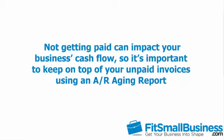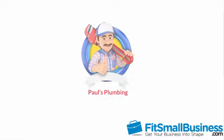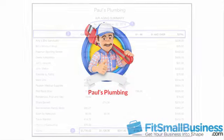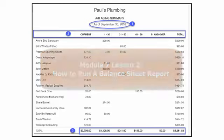To help demonstrate the components of the AR aging report, we will take a look at the AR aging report for a fictitious company, Paul's Plumbing. Here you will find the AR aging summary report as of September 30, 2016 for Paul's Plumbing. Similar to the balance sheet report, this report is as of a specific date. Click here to watch our video tutorial on how to run a balance sheet report.